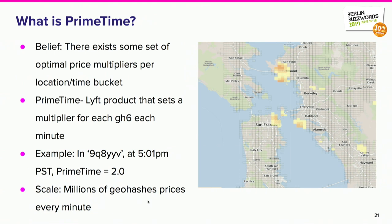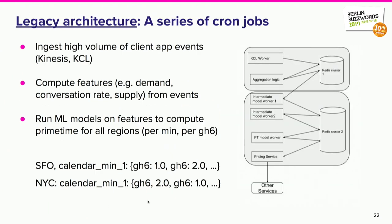We call this mechanism Primetime. Primetime is a multiplier on the base price for a given location and time. To determine that multiplier we need to look at millions of geohashes, because conditions are different at every location and they change fast — so both scale and latency matter. In the legacy architecture this is a series of cron jobs doing staged processing: stage one performs aggregation and results get stored into Redis; then another cron job at a fixed interval picks those up, does model computation on an already trained model; a third phase computes the information for the real pricing service.